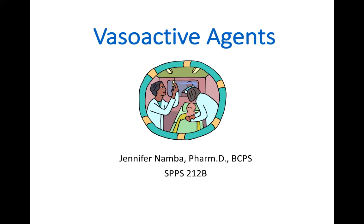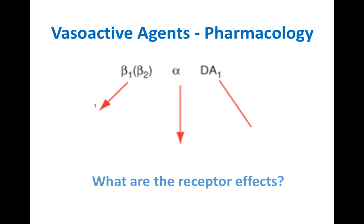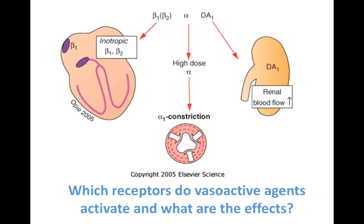Before we start talking about the different types of shock, I thought it would help to review some of the vasoactive agents like pressors and inotropes that we use to treat these patients. To start off, let's review the pharmacology of the different receptors that these vasoactive agents work on. The first are the adrenergic receptors, which include beta-1, beta-2, alpha, and also separately dopamine-1 receptors.